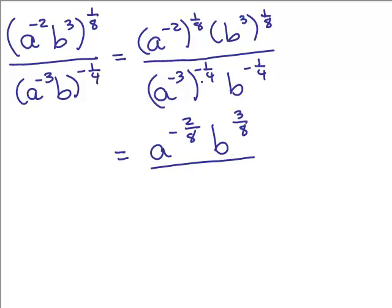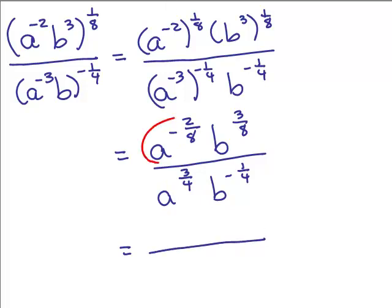In the denominator, if I multiply, that gives me a to the negative 3 times negative 1 fourth is a to the 3 fourths, and b to the negative 1 fourth. Now, as it turns out, it would be easier if I did change that to negative 1 fourth. But also, since it's a negative exponent, I'm going to put that in the denominator. I'm going to circle the ones I'm going to put in the denominator.